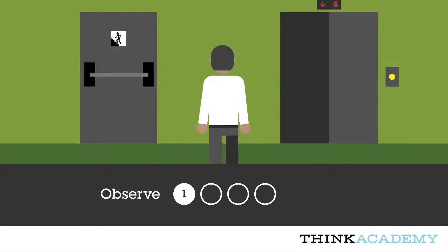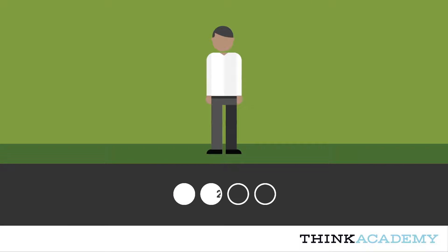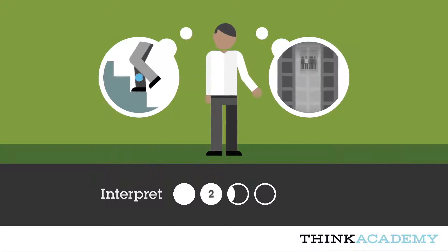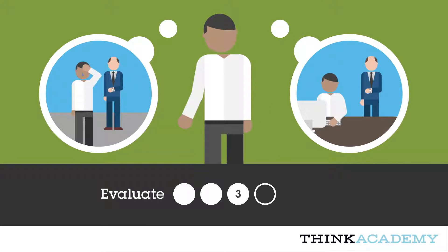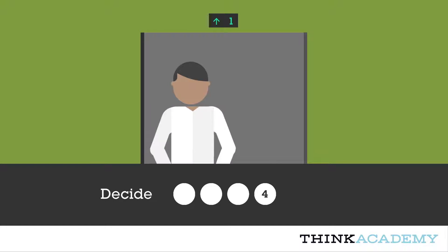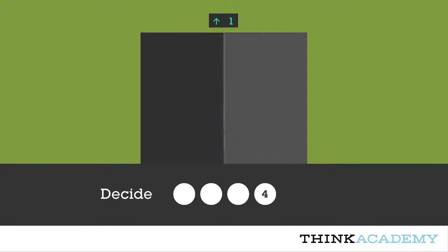First, we observe visible phenomena and bodies of evidence. Second, we draw on what we know to interpret what we're seeing, to generate hypotheses about what it means. Third, we evaluate which hypotheses are right or wrong. Finally, we decide, choosing the option that seems best and acting accordingly.